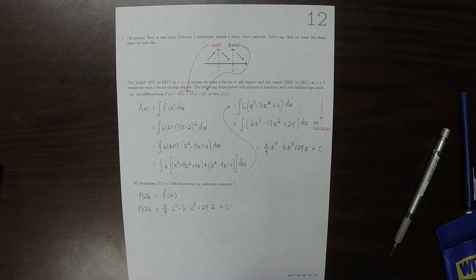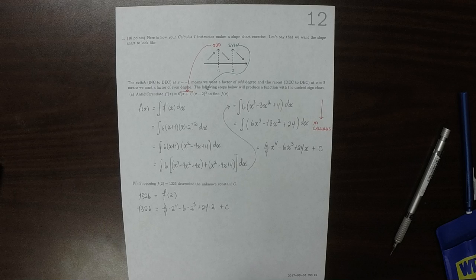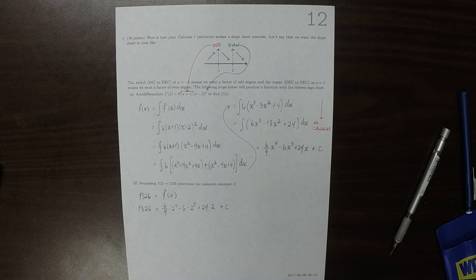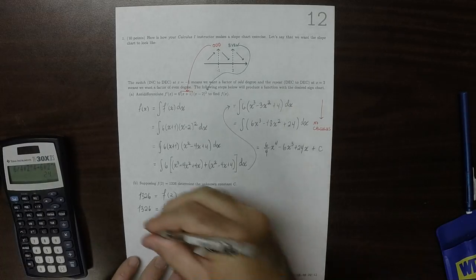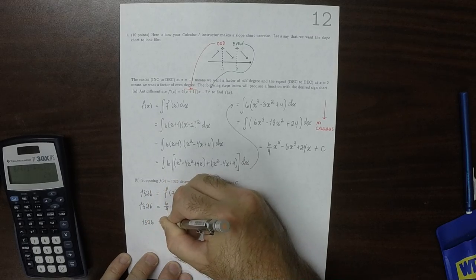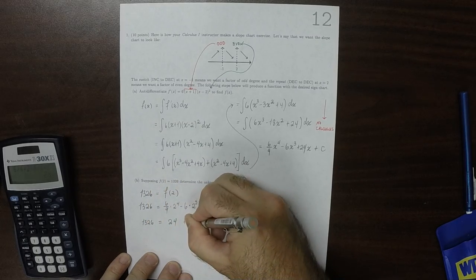6 over 4 times 2 to the 4 minus 6 times 2 to the 3 plus 24 times 2. Let's read that real quick. 6 over 4, 6 over 4. Okay, good. So that's saying that 1326 equals 24 plus c.